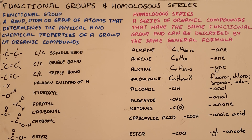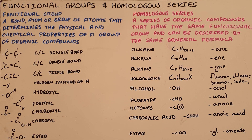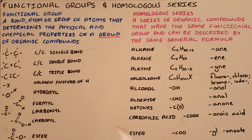It is important to understand the difference between a functional group and a homologous series when looking at organic molecules. A functional group is a bond, atom, or group of atoms that determines the physical and chemical properties of a group of organic compounds. That group that is referred to is the homologous series, where a homologous series is a series of organic compounds that have the same functional group and can be described by the same general formula. The functional group is that bond, atom, or group of atoms that defines a molecule.